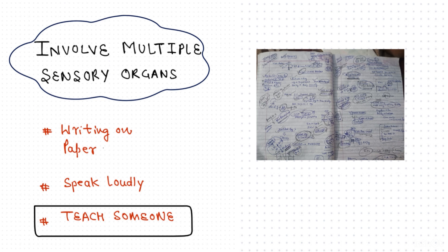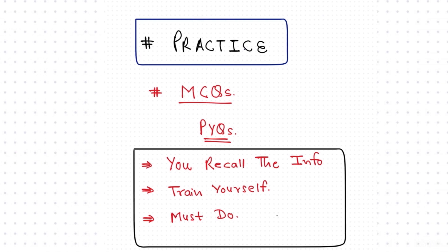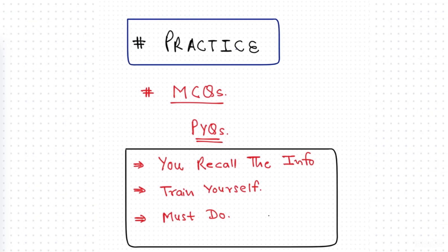And the fourth one is basically the practicing of the MCQs. You have to practice multiple choice questions a lot, and especially the previously asked questions. When you are taking questions, multiple choice questions, you are recalling information from the memory. So it is a form of active recall.